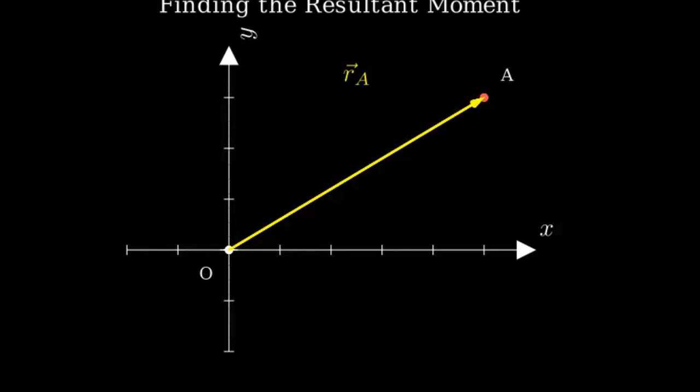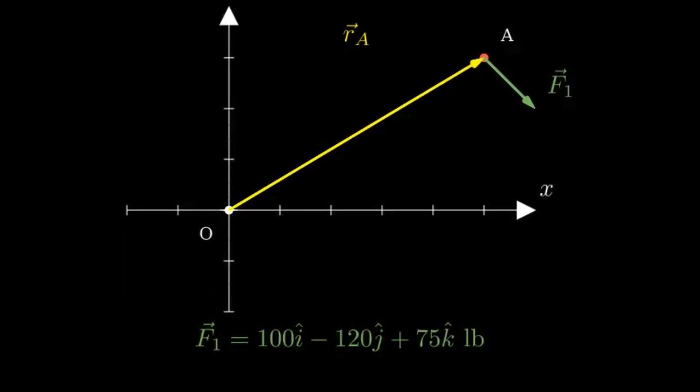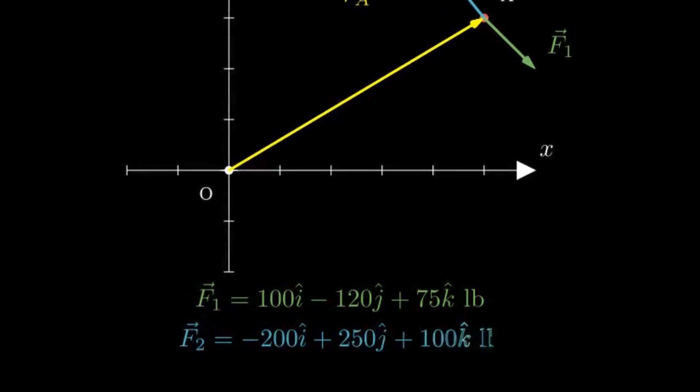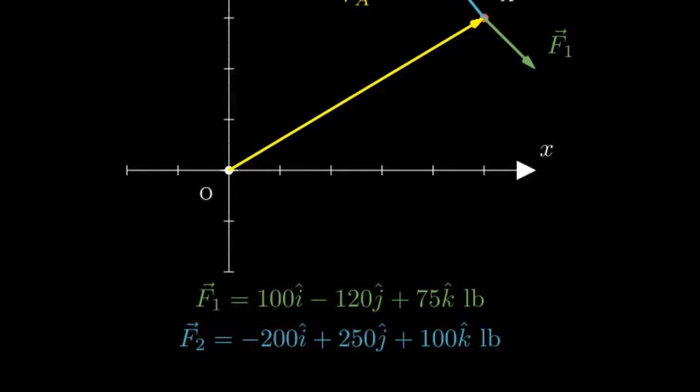At point A, we have two forces acting. Force F1, which is 100i minus 120j plus 75k pounds, and force F2, which is negative 200i plus 250j plus 100k pounds.